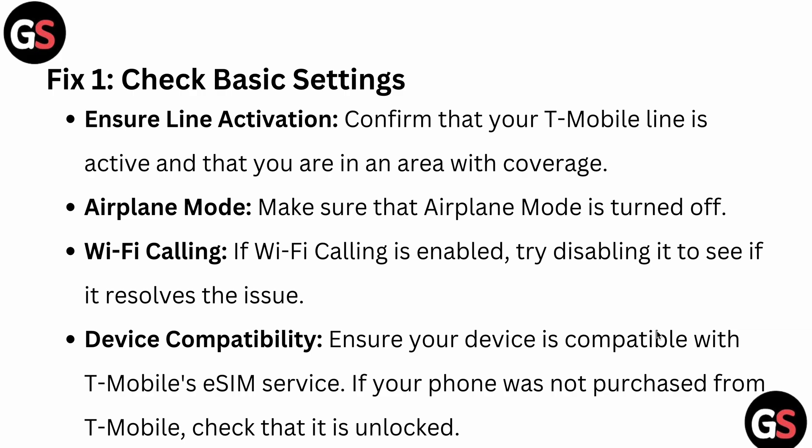To fix this issue, first check some basic settings. Ensure your T-Mobile line is active and that you are in an area with coverage. Also check airplane mode — make sure it is turned off. If Wi-Fi calling is enabled, try disabling it to see if that resolves the issue. Also check device capabilities: ensure your device is compatible with T-Mobile eSIM services.